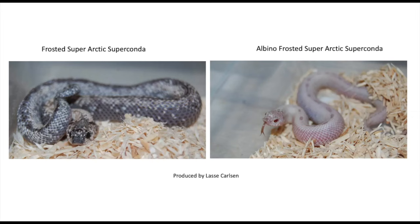Going a little further, you have the frosted super arctic superconda — look how crazy that snake looks on the left-hand side. And then on the right you have the albino frosted super arctic superconda when you combine the albino caramel genes.